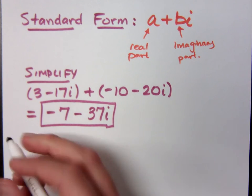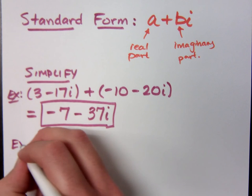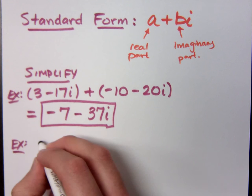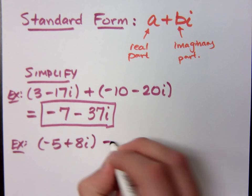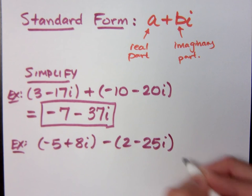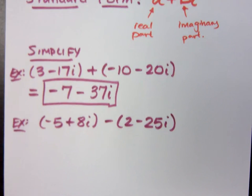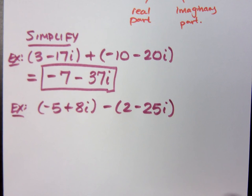We good? Let's do another easy example. Negative 5 plus 8i minus the quantity 2 minus 25i. What do you think you should do here? Laugh? Chuckle? Distribute the negative.